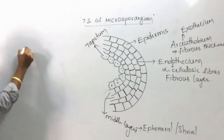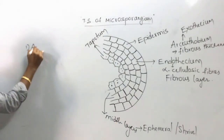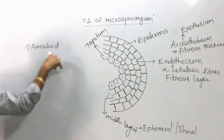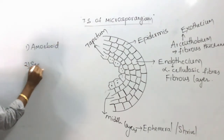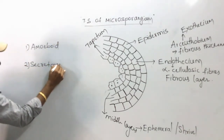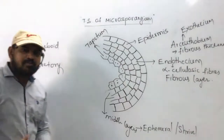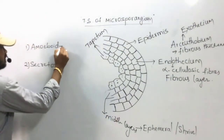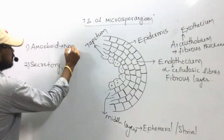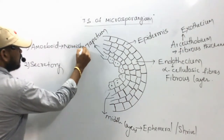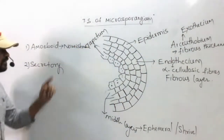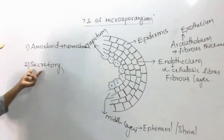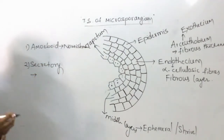Tapetum is of two types: amoeboid tapetum and secretary tapetum. Amoeboid tapetum is involved in nourishment, supplying nutrients to the developing pollen grains.